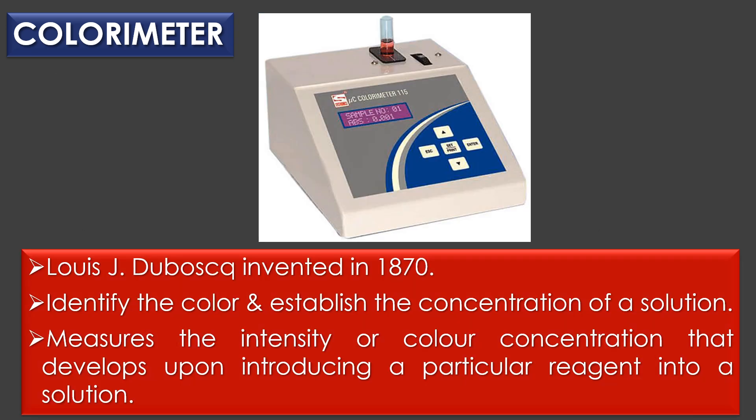Louis J. Dubasque invented the colorimeter in the year 1870. Colorimeters are used to identify the color and establish the concentration of a solution. The colorimeter device also measures the intensity or color concentration that develops upon introducing a particular reagent into a solution.